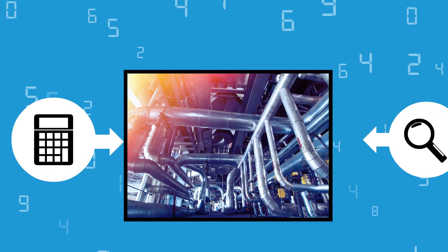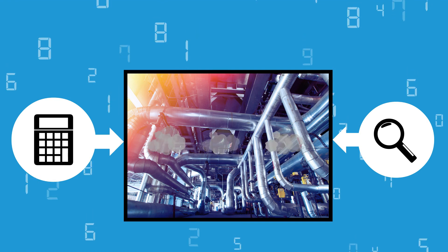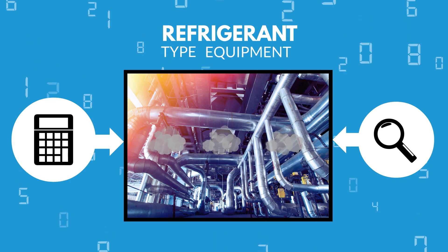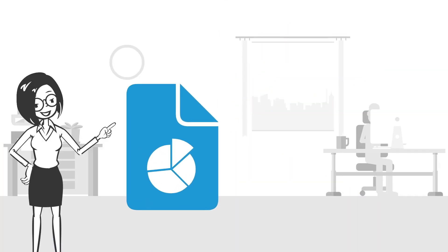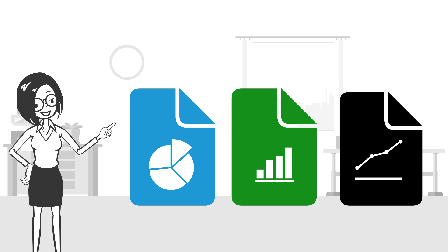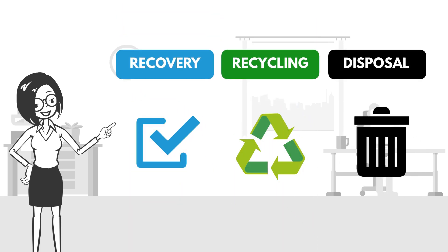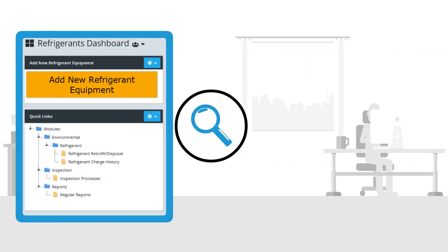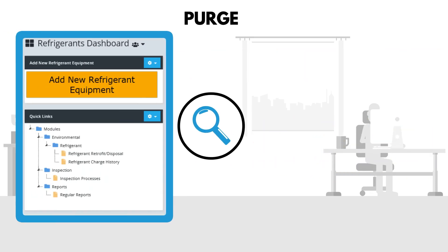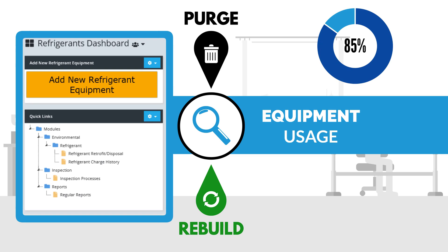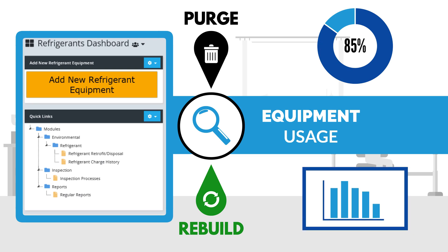ERA calculates and tracks the GHG emissions produced by the specific refrigerant type and refrigerant equipment. Nancy can access detailed reports about her company's emissions accounting for refrigerant recovery, recycling, and disposal. She also uses ERA to track the disposal of refrigerant material and refilling the equipment with new refrigerants. This helps her track equipment usage and visualize site performance using comprehensive KPIs within ERA's executive dashboard.